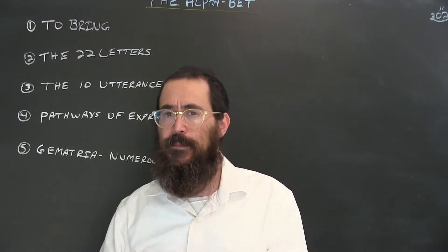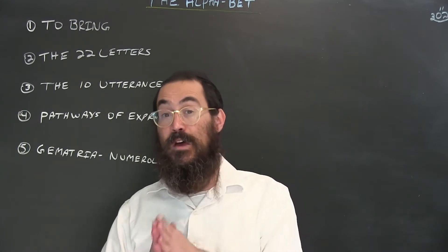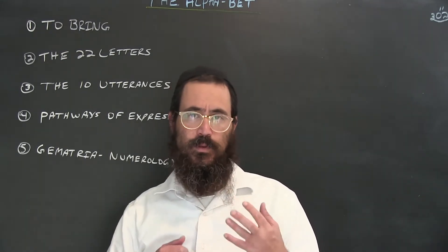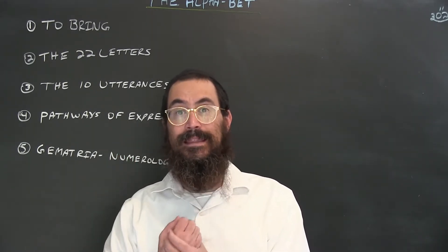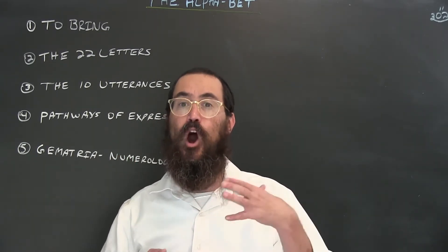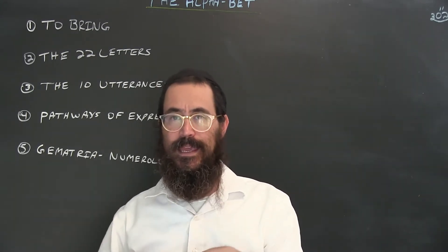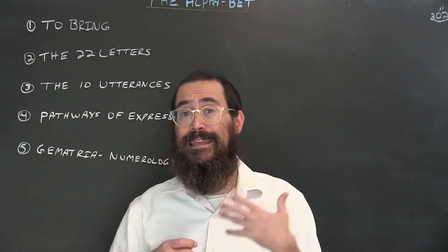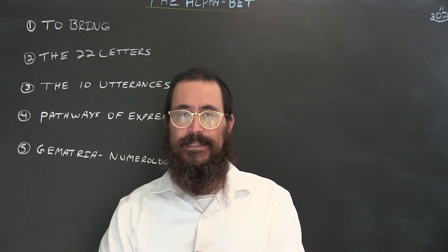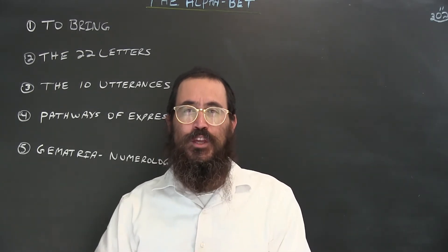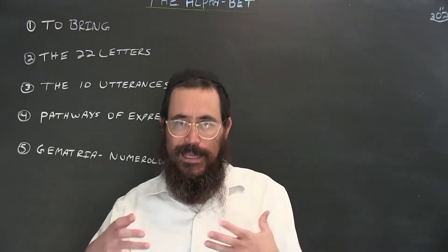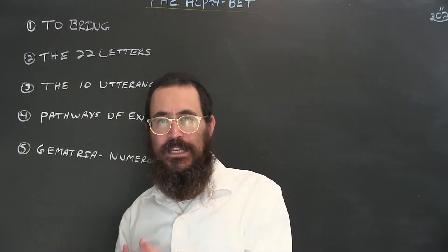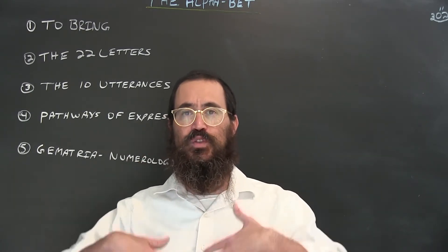There is another word, 'lehagid,' meaning to say over, which comes from the Hebrew word 'gid,' meaning a sinew. 'Lehagid' is sometimes a very harsh level of expression. While 'davar' is a stronger, more internal way of conveying something deep, 'lagid' is to say it as it is — direct, not so polished or refined, not always accepted by others — just like a sinew, which is very harsh. 'Lehagid' means to portray and say something in a very direct form.